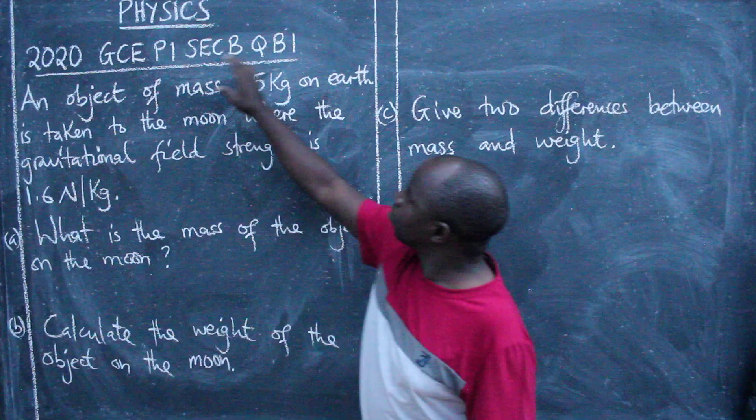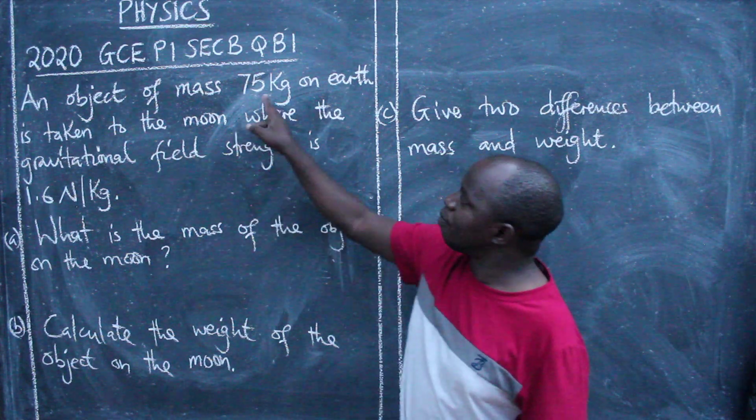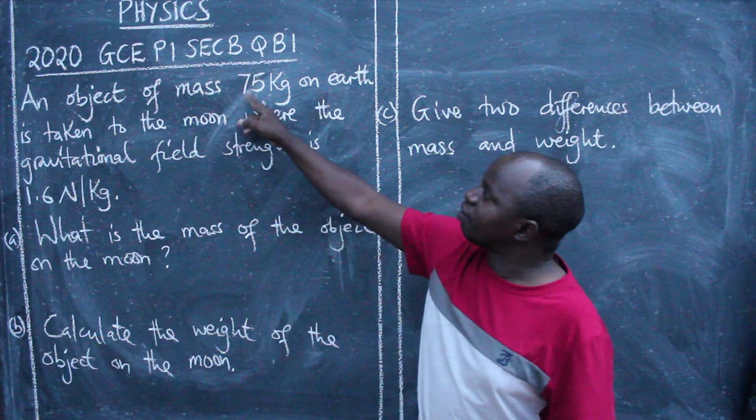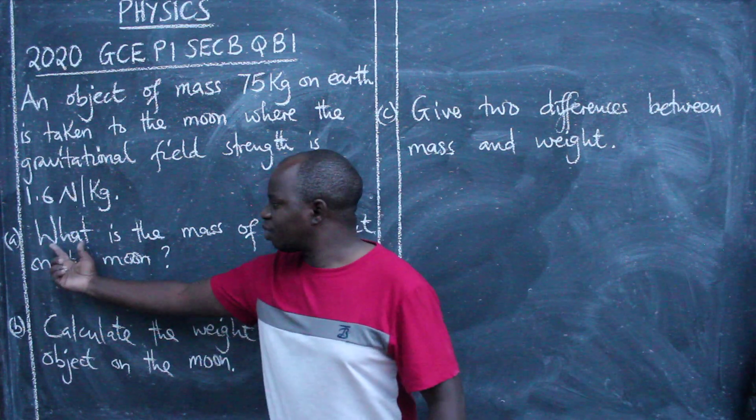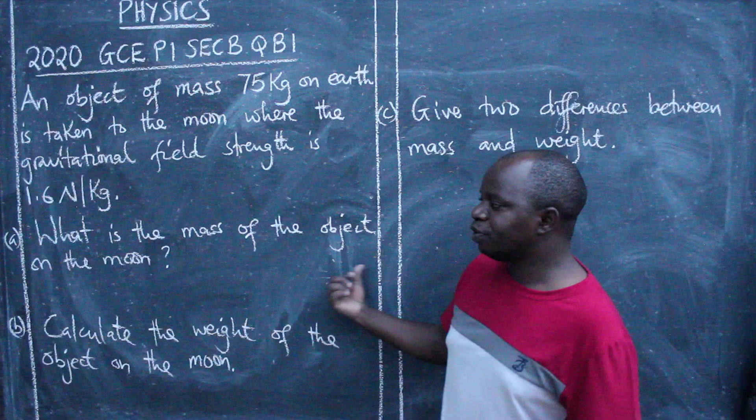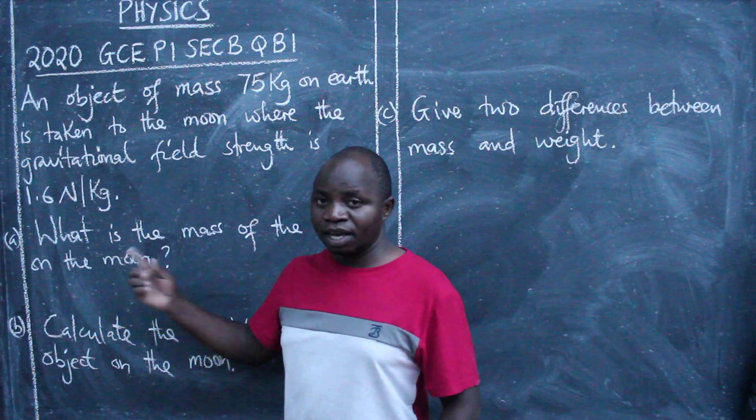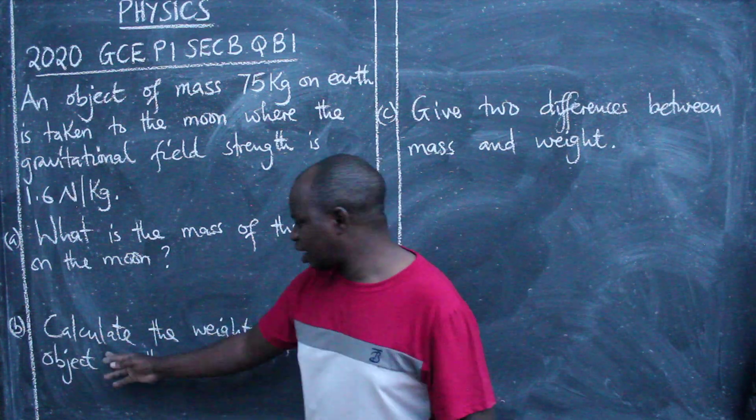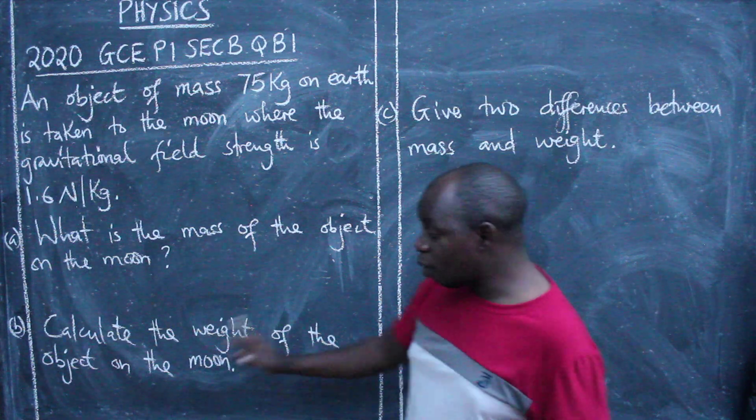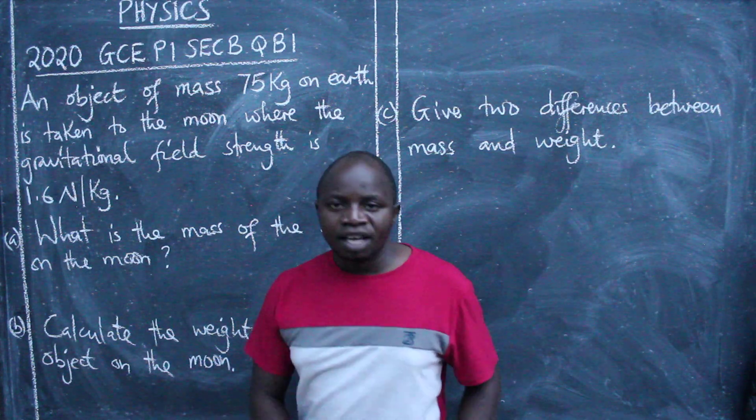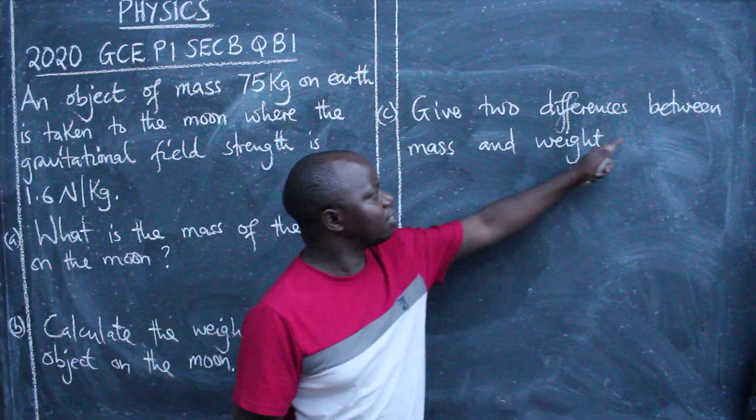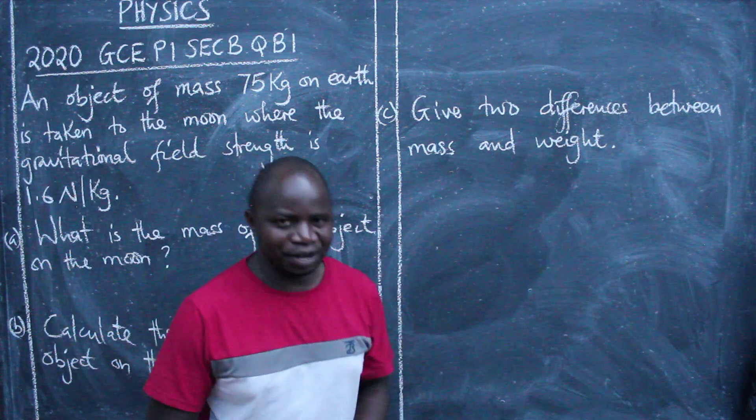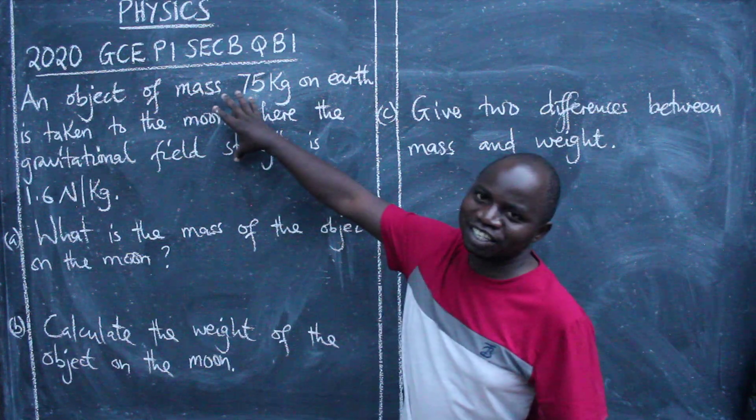Its mass was 75 kg. Now the questions: First, what is the mass of the object on the moon? Second, calculate the weight of the object on the moon. And third, give two differences between mass and weight.